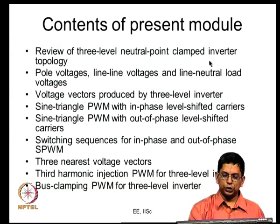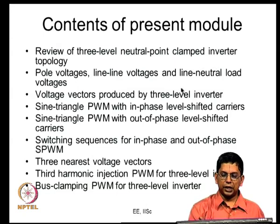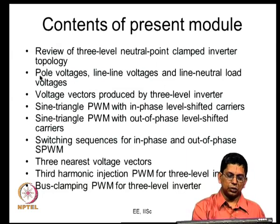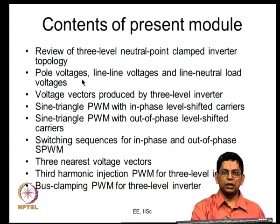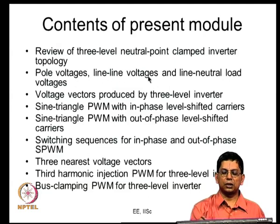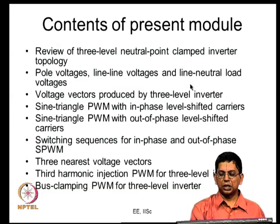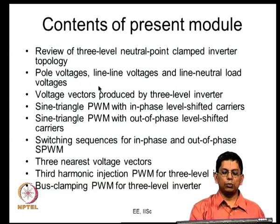In the present module we reviewed the neutral point clamped inverter topology and looked at pole voltages, line voltages, and line-to-neutral voltages. The essential difference is that in a two-level inverter the pole voltage can only be plus or minus Vdc/2, whereas here it can also be 0. This intermediate voltage level leads to more voltage levels — five different values for line-to-line voltage — and more instantaneous values for line-to-neutral voltage, which is responsible for improved waveform quality.